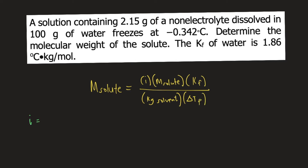The i in the formula is what you call the Van't Hoff factor. The Van't Hoff factor depends on the nature of the solute — whether it's an electrolyte or a non-electrolyte. According to the problem, our solute is a non-electrolyte, and for a non-electrolyte, the Van't Hoff factor is equal to 1.